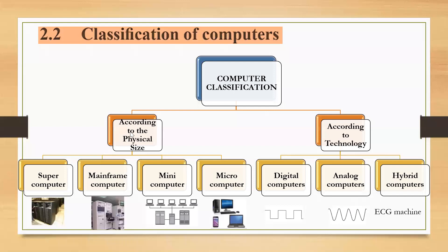What are the computer types? What are the computer types according to the physical size? Supercomputers — this is the most powerful computer. You can remember we can use those types of computers to solve complex calculations.